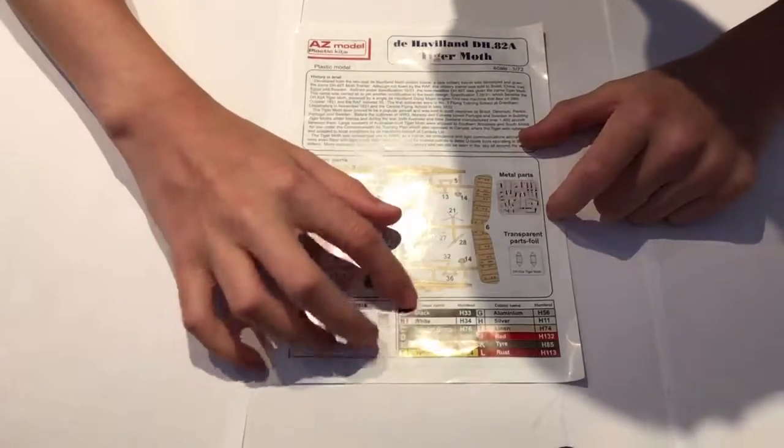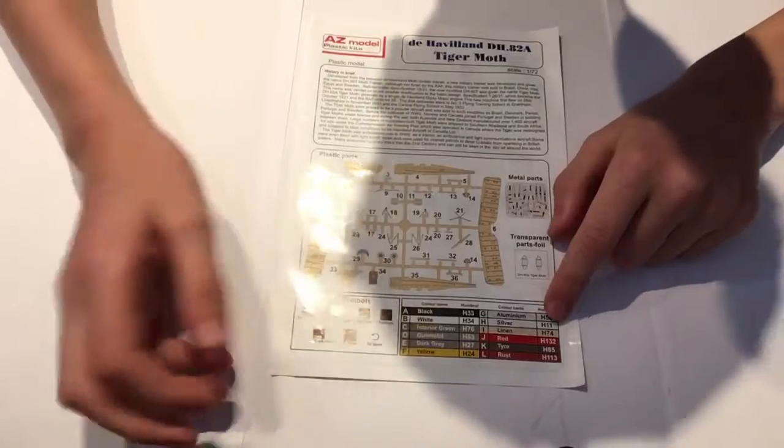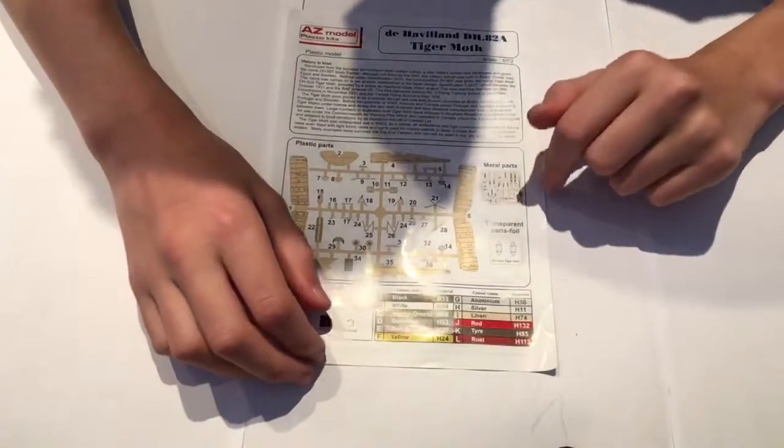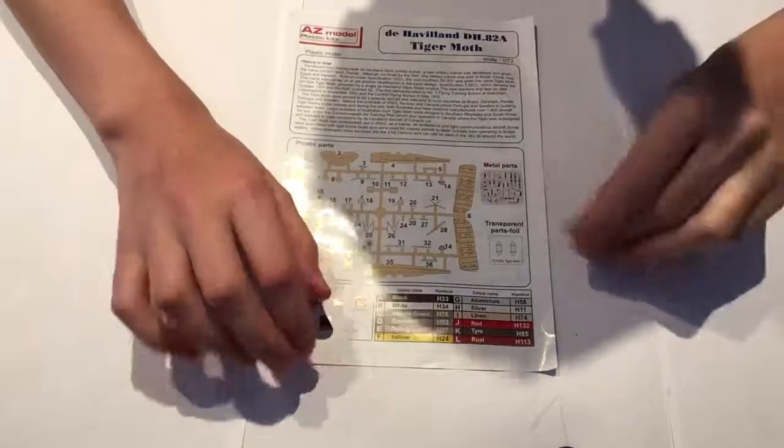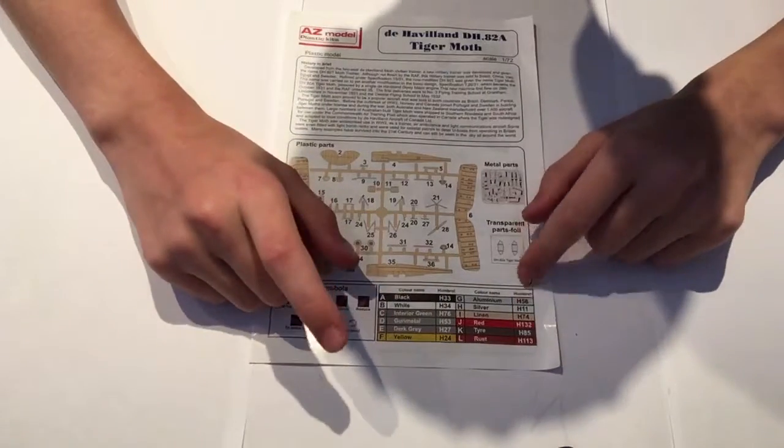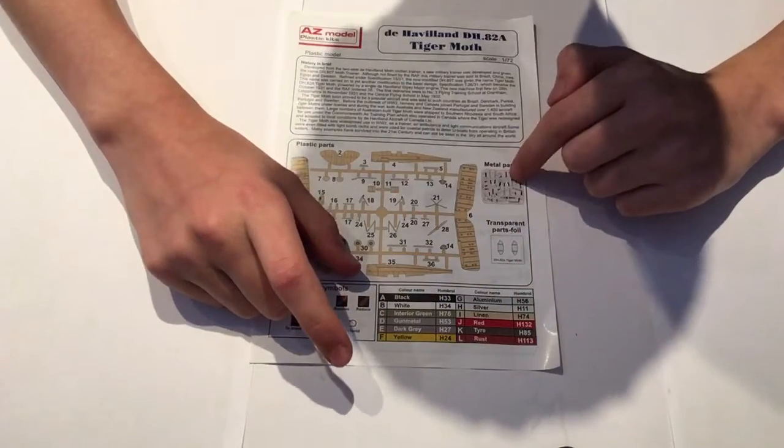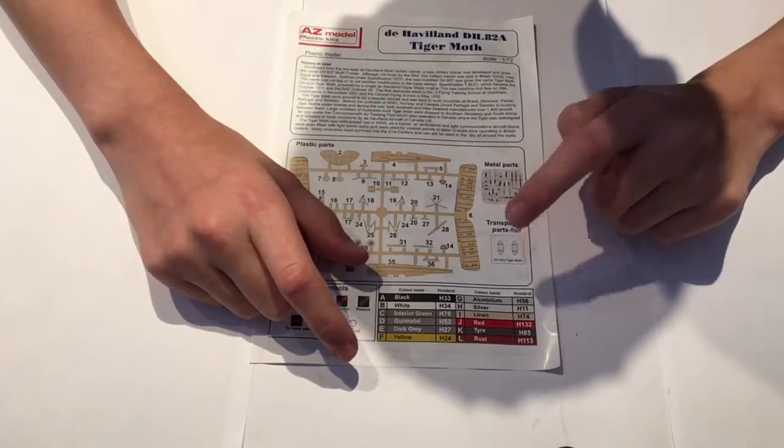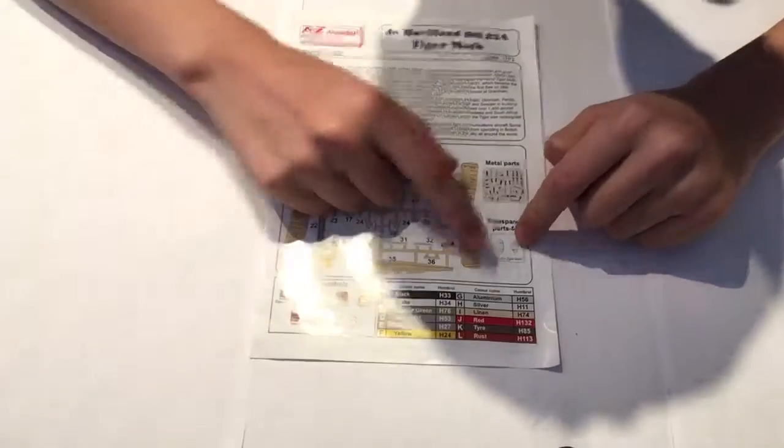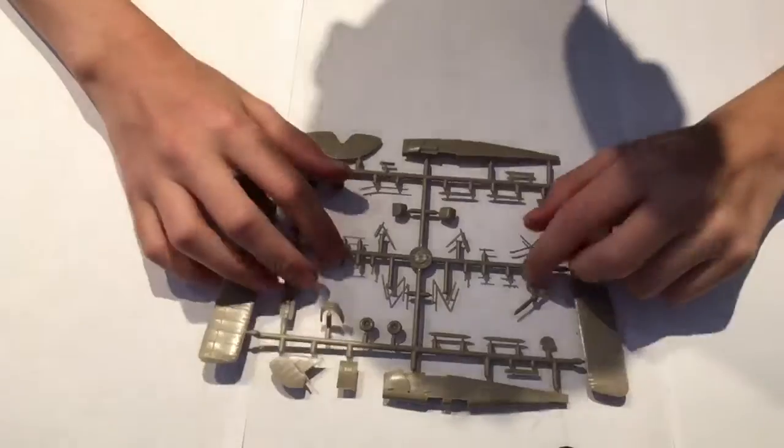So there are the instructions. As you can see, these are the parts it uses. This recommends the paints, these are Humbrol recommendations, so if you build Airfix it'll be an alright option. It looks better than the Airfix option, but I suppose they retooled it not too long ago. Yeah, the metal parts and the transparent foil for the canopy.